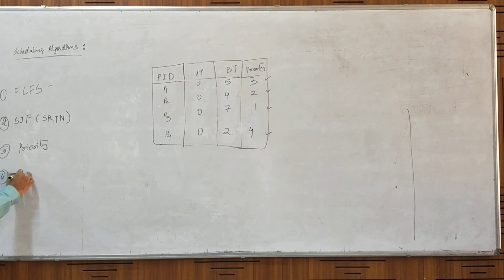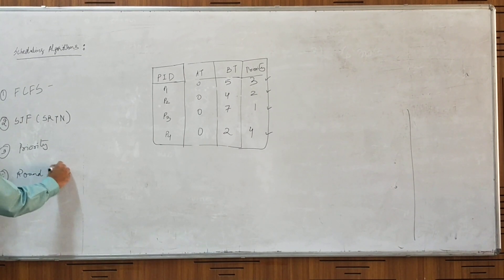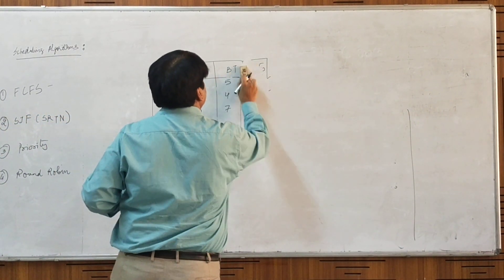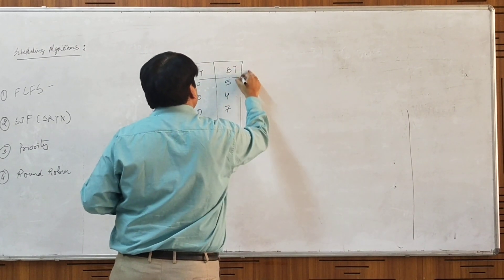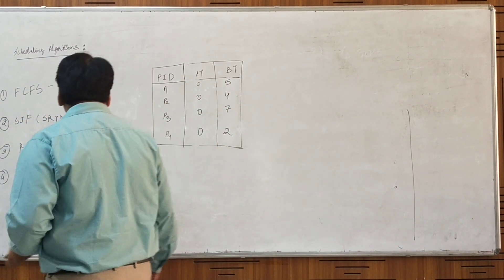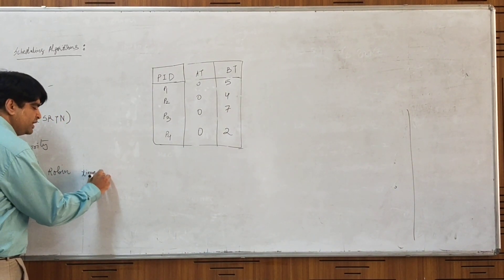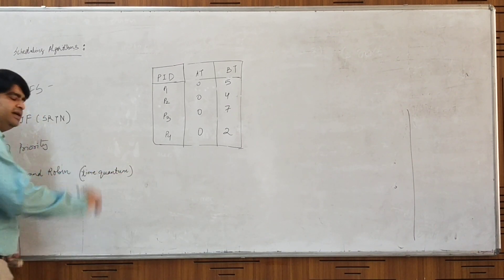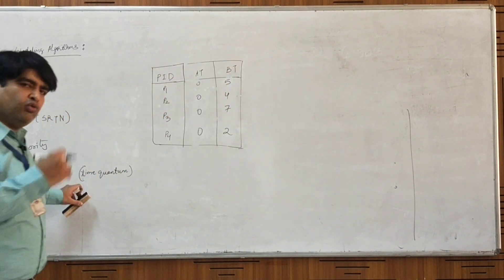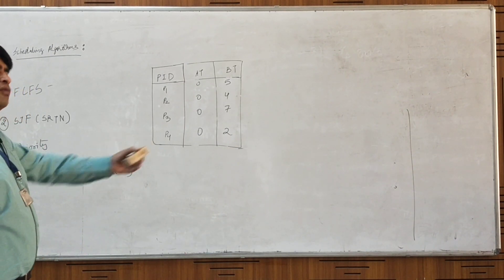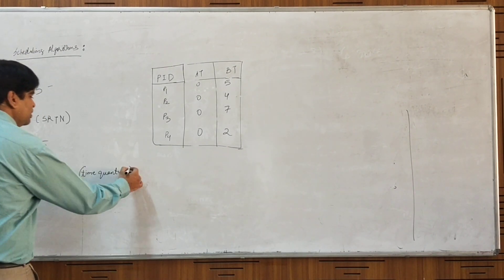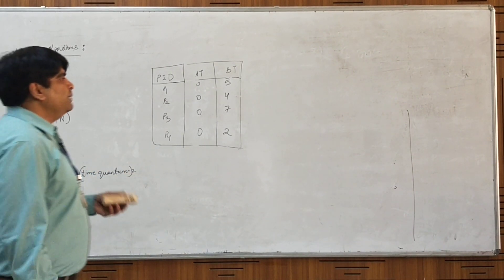We can use another scheduling algorithm where the starvation problem will not occur and everyone is given the same amount of time. That approach is known as Round Robin scheduling. In this method, each process is given an equal amount of time called the time quantum. Whether or not it has completed its execution, if a process does not complete within that time quantum, we forcefully take the CPU and allocate it to another process. After some time, that process will receive the quantum again and can continue its execution from where it left off. Let's take an example where time quantum is 2 seconds.